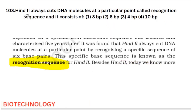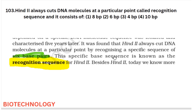The next question: restriction enzymes always cut the DNA at a particular point called the recognition sequence, and it consists of how many base pairs? The answer — six base pairs — is already given directly in your NCERT. So it is a direct question only, from your biotechnology chapter.